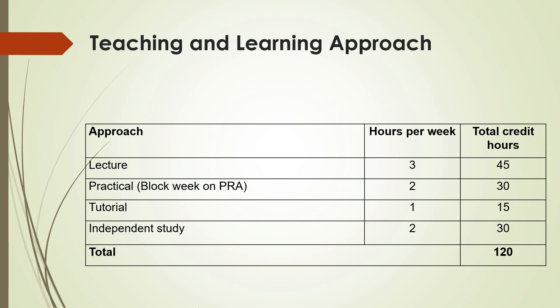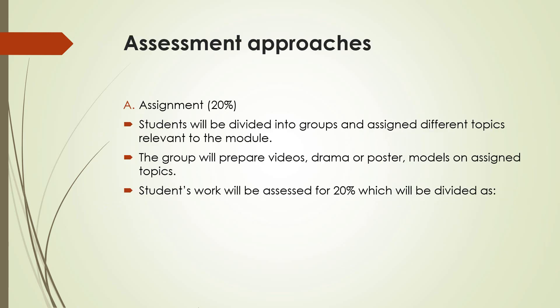Teaching and learning approaches: The approaches that will be used are lecture, practical — which will be a block week on PRA — tutorial, and independent study. The total credit hours for the module is 120, segregated as follows: lecture 45 hours, practical 30 hours, tutorial 15 hours, and independent study 30 hours.